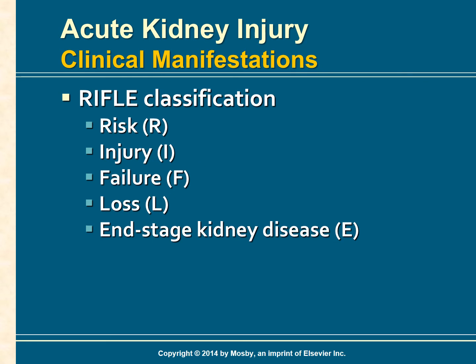Clinically, AKI may progress through three phases: oliguric, diuretic, and recovery. When a patient does not recover from AKI, chronic kidney disease may develop. The RIFLE classification is used to describe and standardize the diagnosis of the stages of acute kidney injury. Risk, or R, is the first stage where the GFR is decreased by 25 percent.